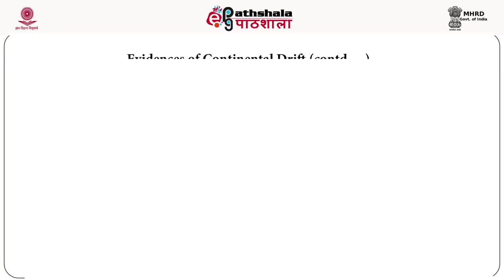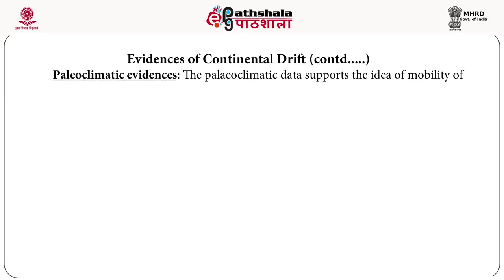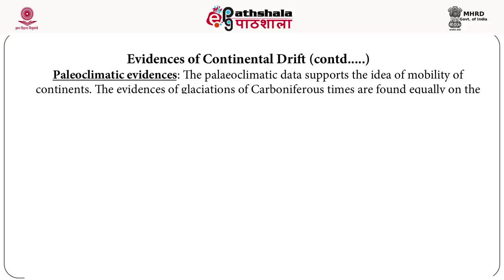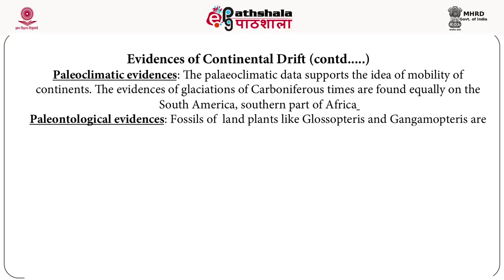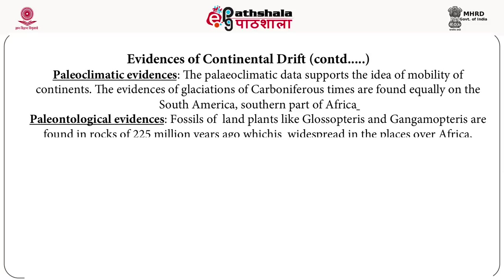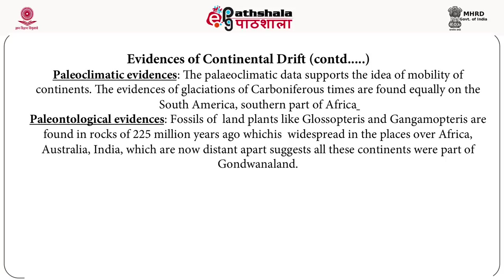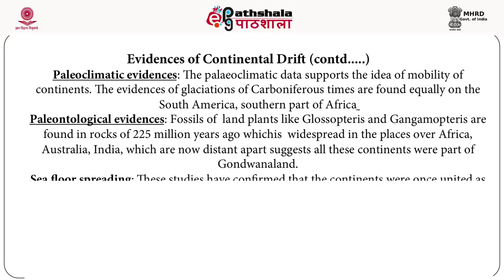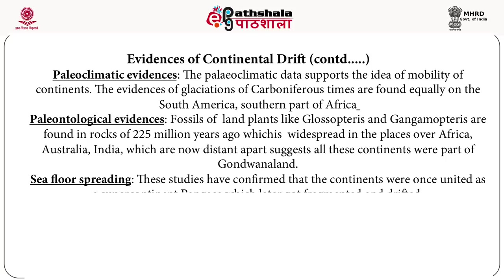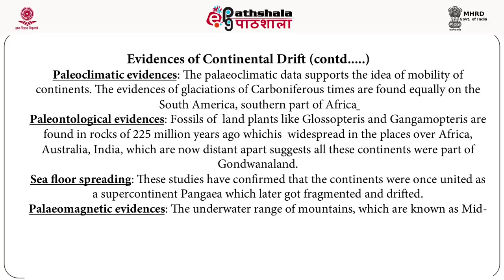Paleoclimatic evidences support the mobility of continents: evidences of glaciation from Carboniferous times are found equally in the southern part of America and southern part of Africa. Palaeontological evidences include fossils of land plants like Glossopteris and Gangamopteris found in rocks of 225 million years ago, widespread across Africa, Australia, and India, suggesting these continents were part of Gondwana land. Seafloor spreading studies confirmed continents were once united as the supercontinent Pangaea, which later fragmented and drifted.